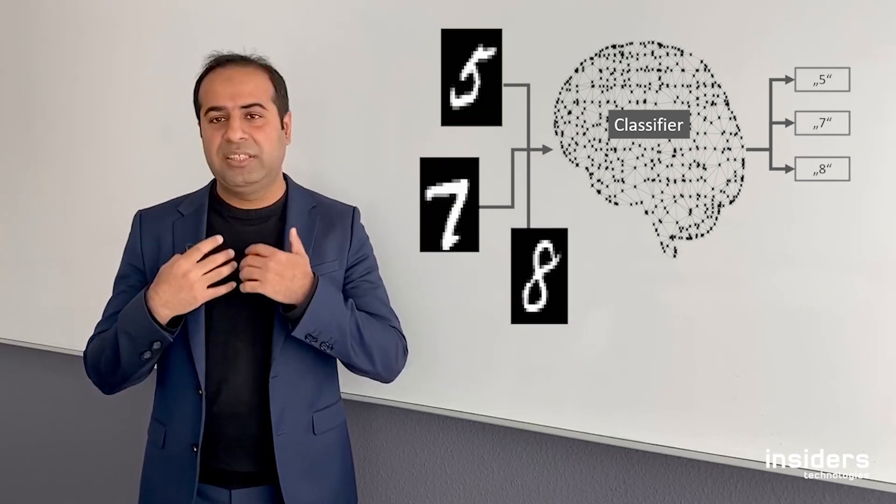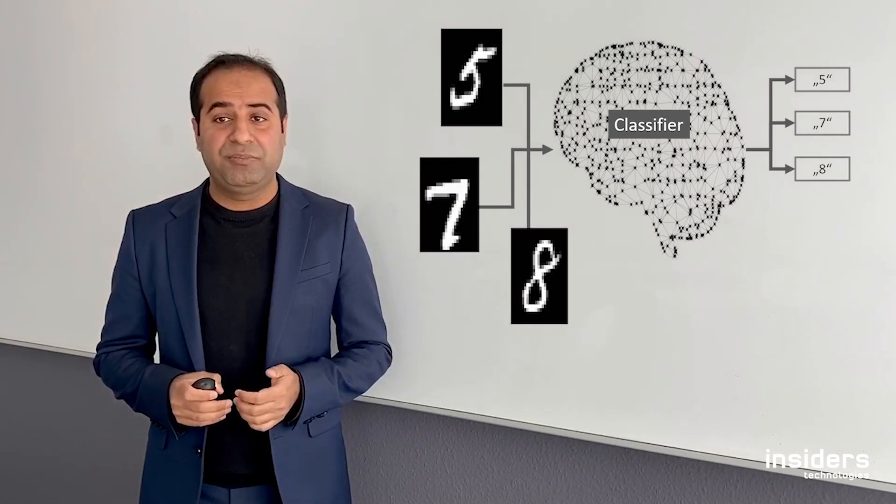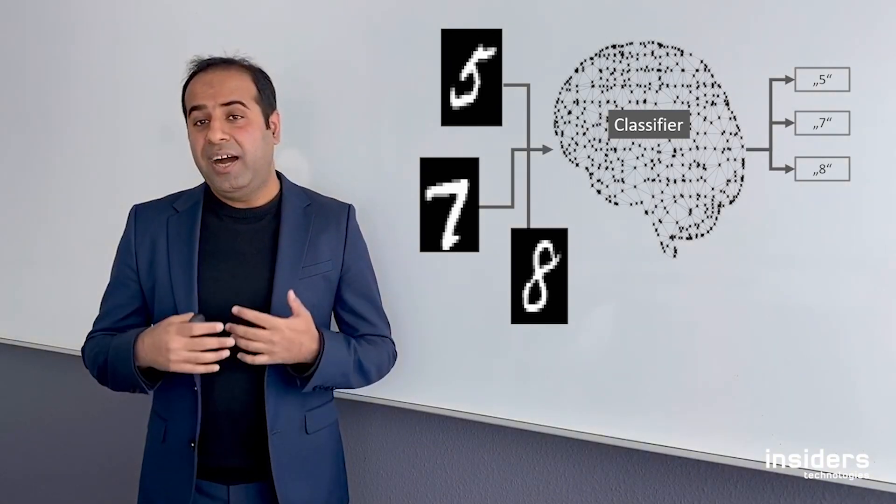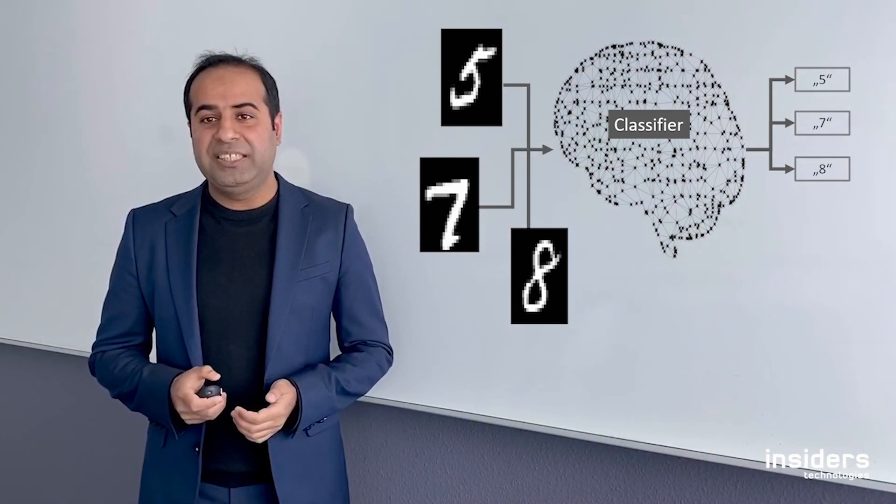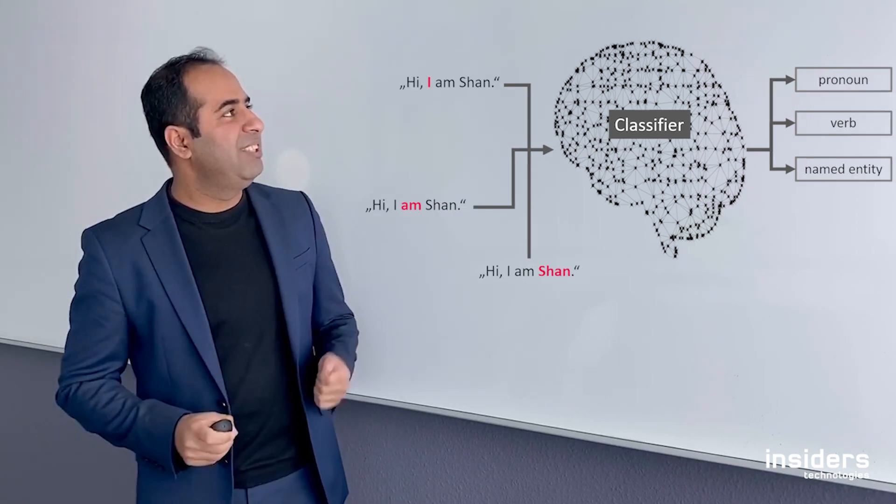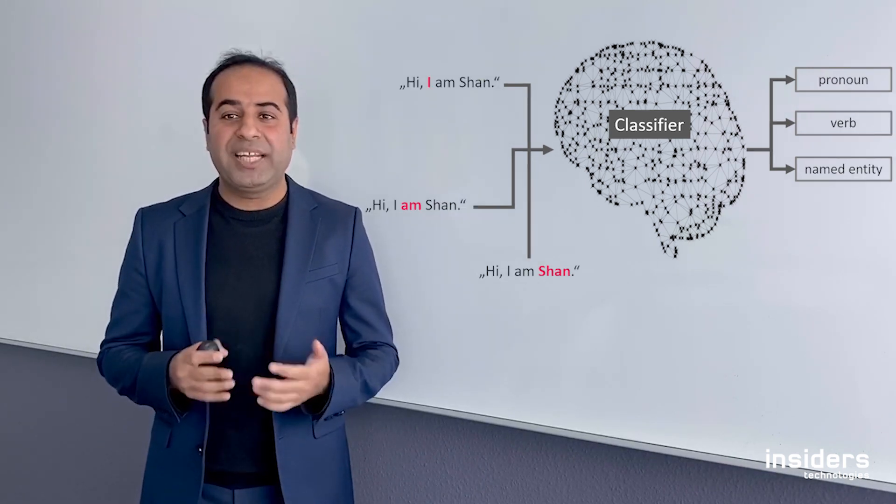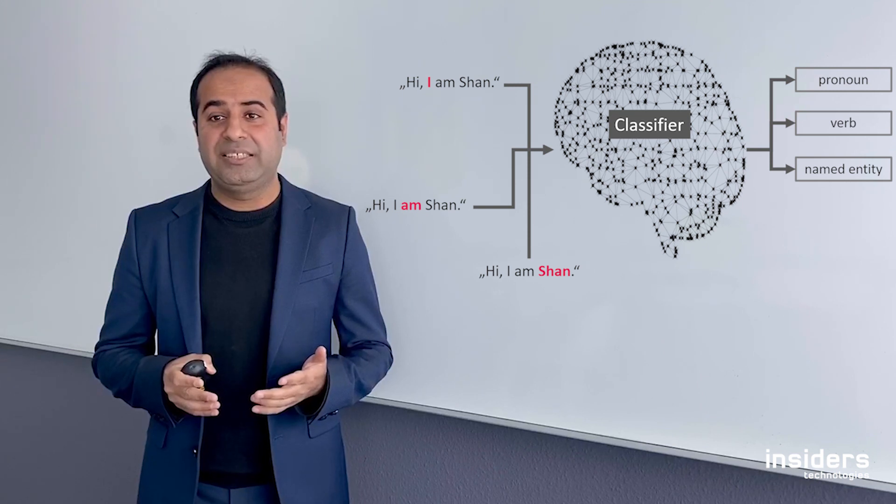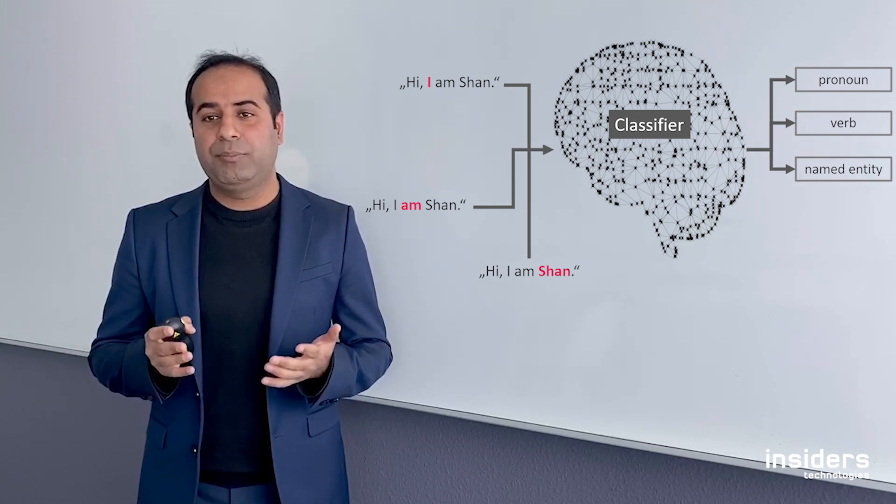In another figure, we are trying to do the recognition of handwritten digits. This is also a form of artificial intelligence. And the third example is about these sentences - we want to recognize the parts of speech: where is the pronoun, where is the verb, where is the named entity.